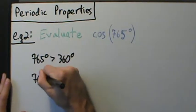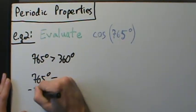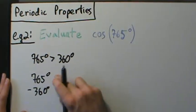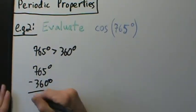765 degrees minus 360 degrees. So maybe it'll be easier to think of it like this, minus 360 degrees. So if we subtract those, then what we're going to get is 405 degrees.